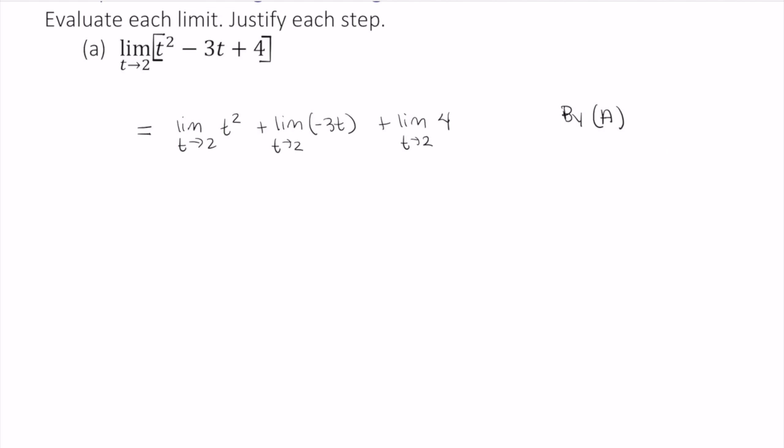Now, by F we can rewrite this first one as the limit as t approaches 2 of t. And this is quantity squared. And that is by F.